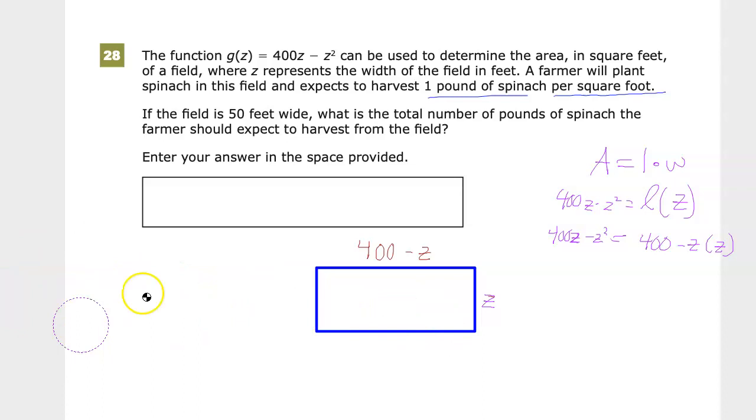Anyway, I'm dealing with this stuff. They also tell us that the field is 50 feet wide. So they told me the width was z, so z is equal to 50. So up here, that means 400 minus 50 equals 350. So if area equals length times width, the length is 350 times 50.